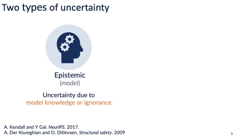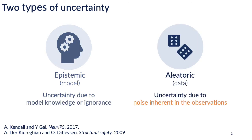Epistemic uncertainty relates to the model and its parameters — it is due to model knowledge or ignorance of the true data generating process. Since it has to do with knowledge, we presume it can be decreased by training on a larger, representative dataset. Aleatoric or aleatory uncertainty relates to uncertainty intrinsic to the data, due to noise inherent in the observations. Since it has to do with an intrinsic quality of the data, we presume it cannot be decreased by collecting more data — much like collecting more samples of a roll of a fair die won't improve your prediction of the next roll.